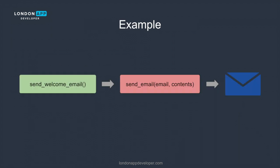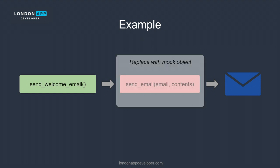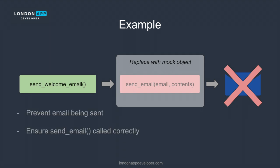When you write your test you can use mocking to avoid sending an actual email. You can override the function in the dependency that sends the email and replace it with a mock object. Using this mock object we can avoid sending an actual email and instead just check that the function was called with the correct parameters. So that's an example of how mocking would work in practice.